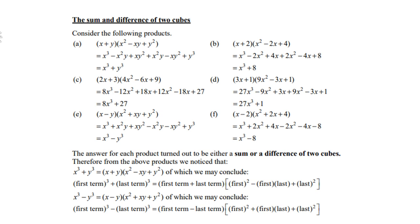Going back to A, x³ comes from x times x times x in the first bracket, and y³ comes from y times y times y. In B, x³ comes from x times x times x, and 8 comes from 2 times 2 times 2, with the same sign.